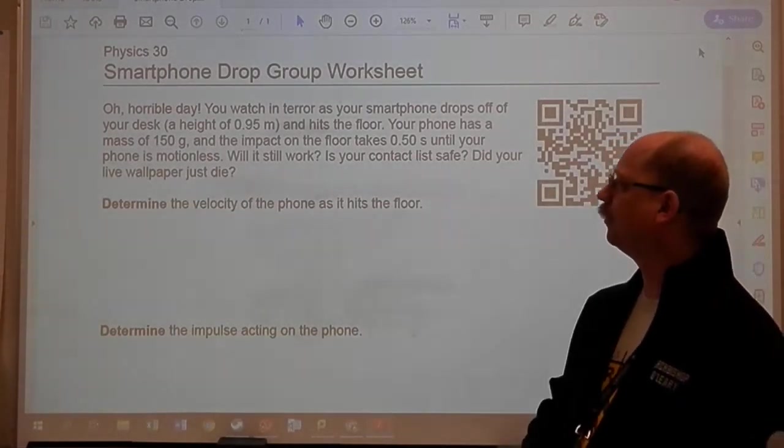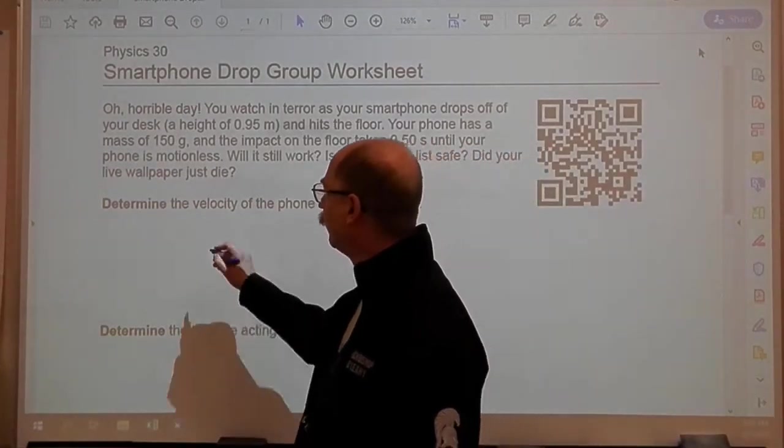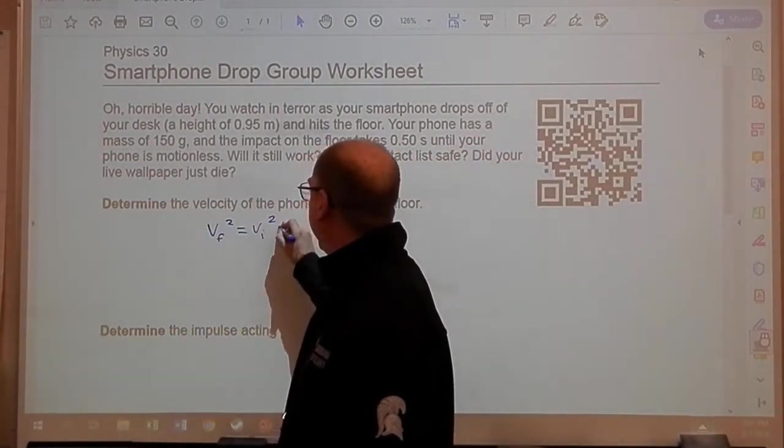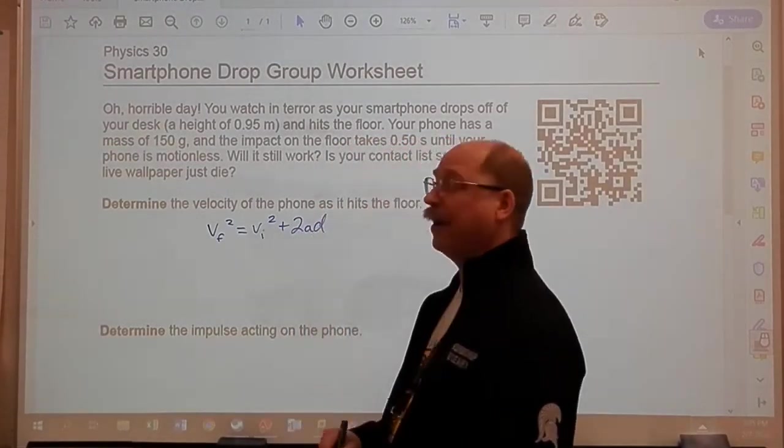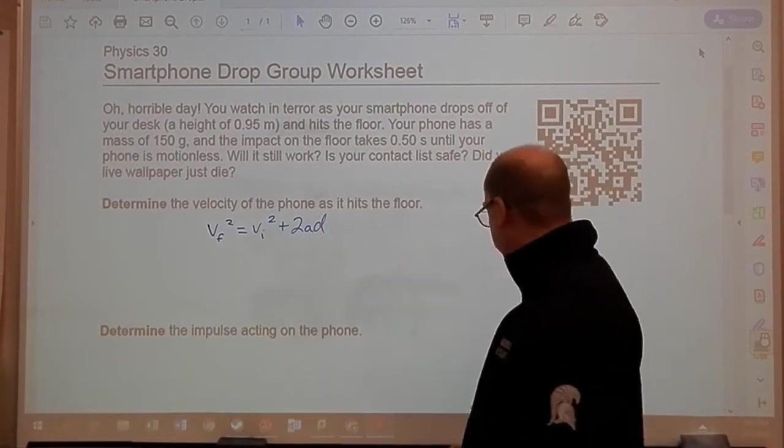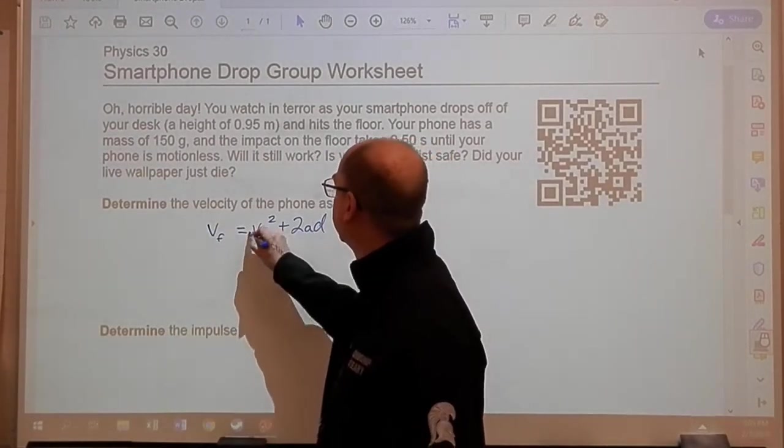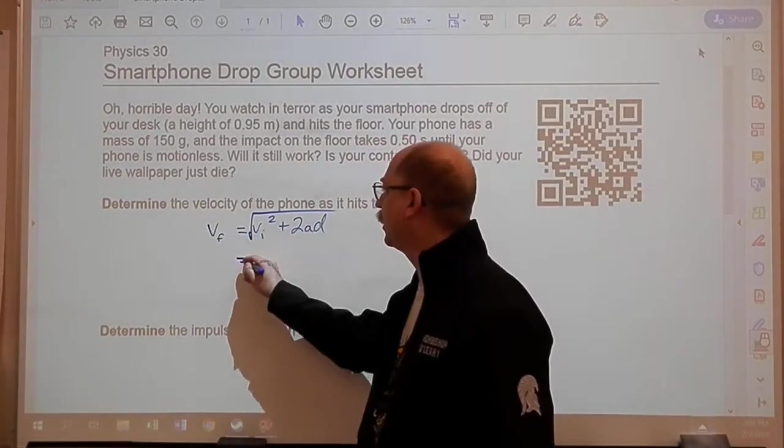So the first part is determine the velocity of the phone as it hits the floor. Probably the easiest way is to go ahead with a kinematics formula. We're gonna solve for VF, so we'll square root both sides like that. Stick in our numbers.